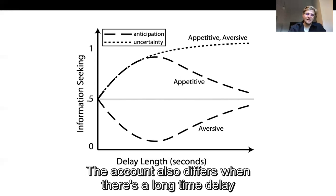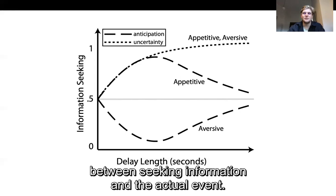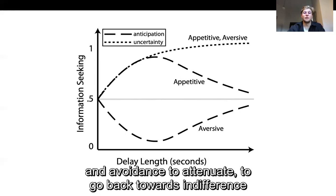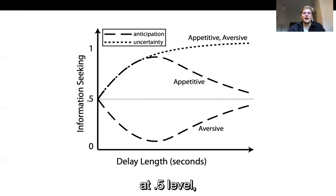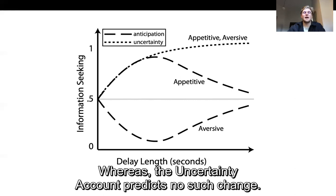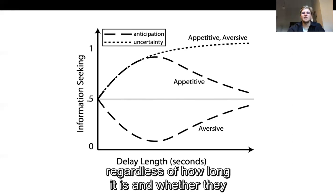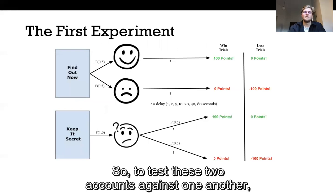The accounts also differ when there's a long time delay between seeking information and the actual event. The anticipation account predicts information seeking and avoidance to attenuate, so go back towards indifference at the 0.5 level at very long delays, which you can see in this diagram here. Whereas the uncertainty account predicts no such change. People will just continue seeking information regardless of how long it is and whether they expect it to be positive or negative news.